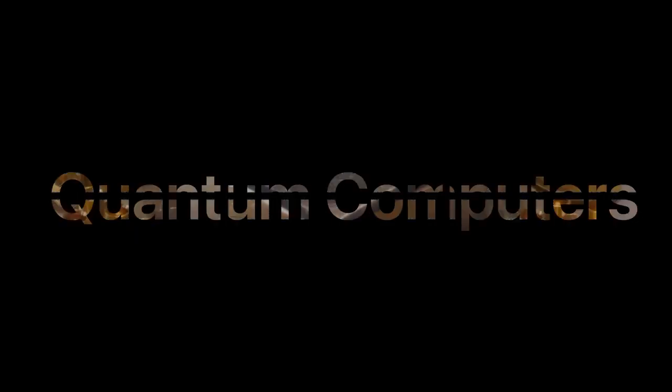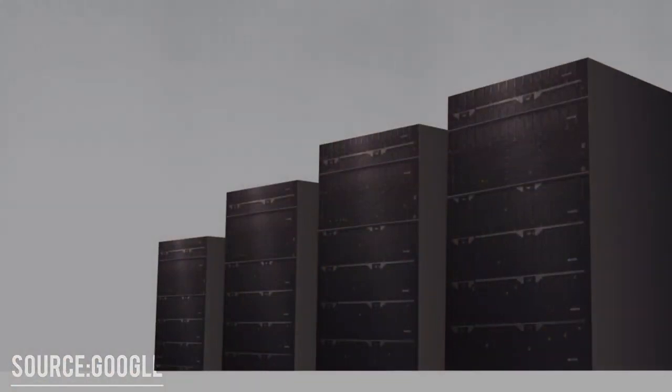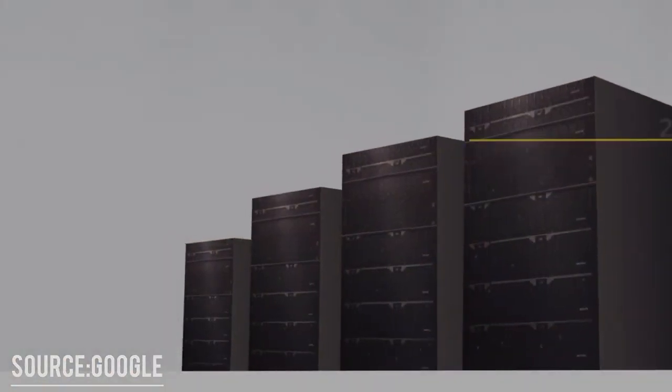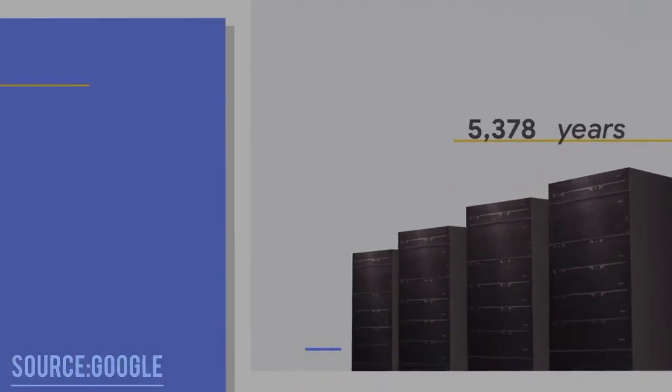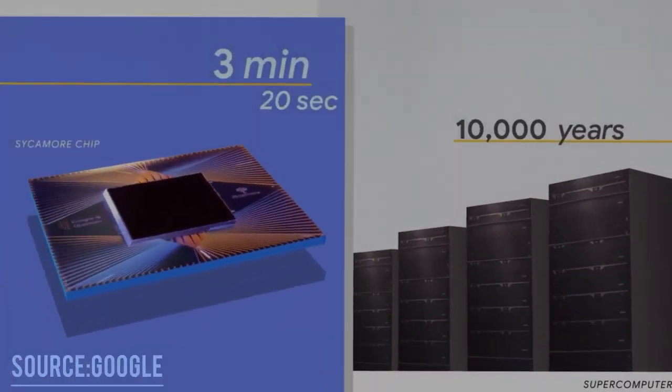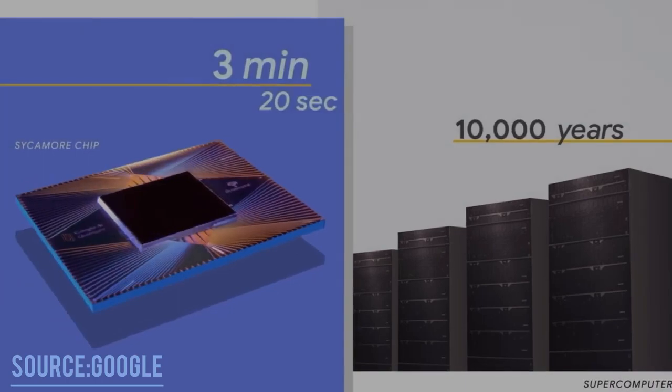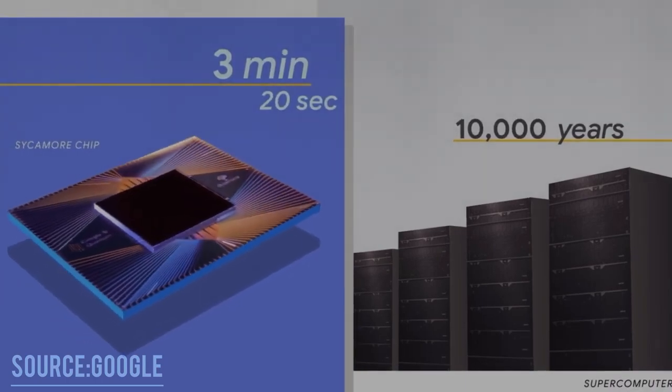Using qubits and their properties, quantum computers are able to perform calculations that might otherwise take millions of years. In 2019, Sycamore, Google's quantum processor, performed a calculation in just 200 seconds that Google claimed would take a state-of-the-art computer 10,000 years to finish.